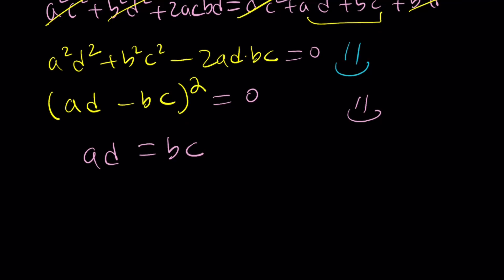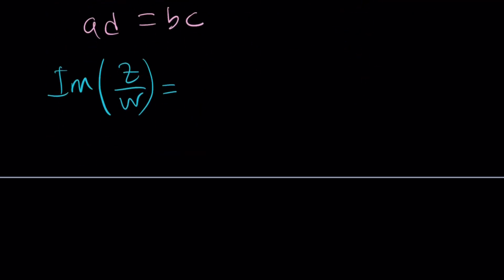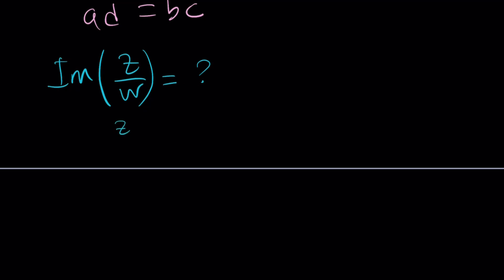We want to find the imaginary part of Z over W, the quotient. How do you find it? Let's find out. What is Z over W first of all? Let's find that out.